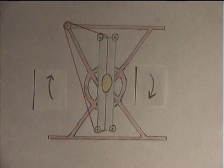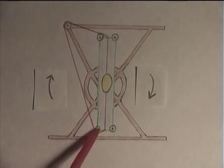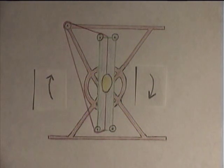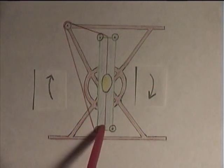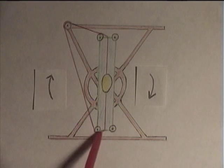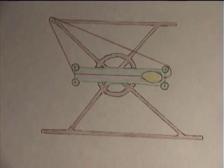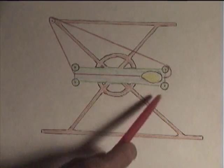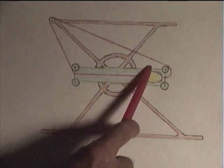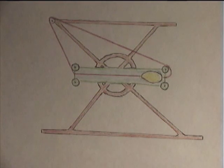As the balloon continues to rise, it continues to pull this end of the tube upward and around. The tube has rotated to this position. In this position, the tube is almost ready to make another complete rotation.